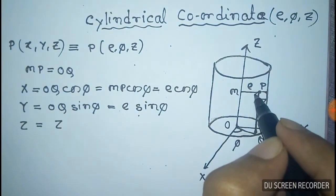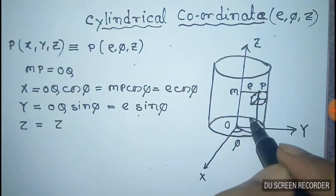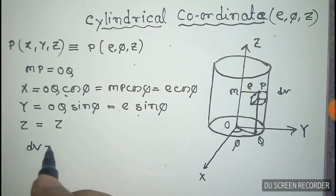And the volume element of this cylinder is given by rho d-rho d-phi dZ. That's given by rho d-rho d-phi dZ.